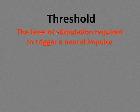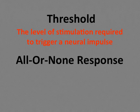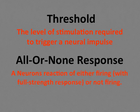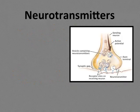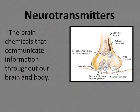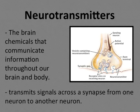When a neuron fires, it sends impulses down its axon, carrying information to another cell. The all-or-none response means a neuron either fires with its full-strength response or not at all — it doesn't vary in intensity. Like a gun, neurons either fire or they don't. Neurotransmitters are chemicals released from the sending neuron that travel across the synaptic gap and bind to receptor sites on the receiving neuron, communicating information throughout our body.